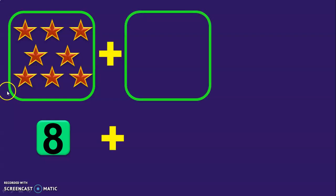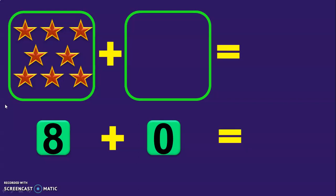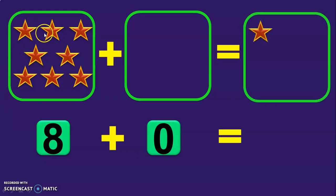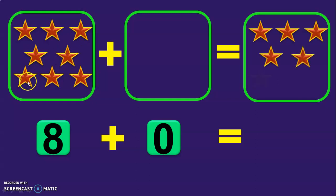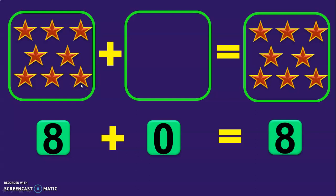Let us do one more example to understand this concept better. You have a box with a collection of 8 beautiful stars: 1, 2, 3, 4, 5, 6, 7, 8. You have another box which is empty — there are 0 stars in that box. What is the total number of stars with you now? Let us count: 1, 2, 3, 4, 5, 6, 7, 8. The total number of stars is also 8. So your second property is: when 0 is added to any number, the sum will remain the same number itself. Stay with me till the end of this session.